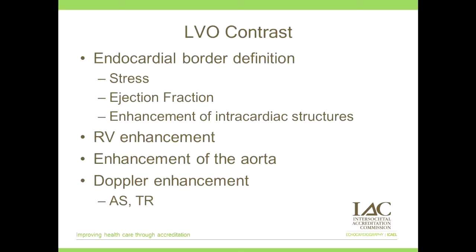How do we use contrast? Endocardial border definition is what we hear most often. Those currently using contrast probably began with stress echo, where we're always looking at endocardial definition throughout the stress imaging. We also utilize contrast with ejection fractions — tracing out the ejection fraction. We use contrast for the enhancement of intracardiac structures like a thrombus in the apex or a tumor within the left ventricle. We also use contrast for RV enhancement for RV volumes and RV function, and even for enhancement of the aorta, including with transesophageal echo.